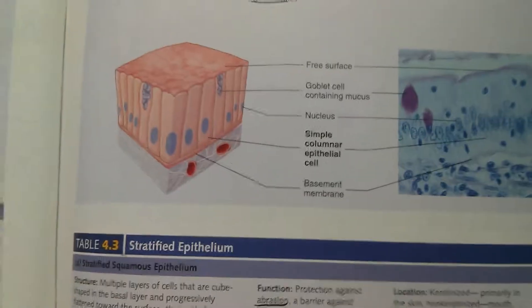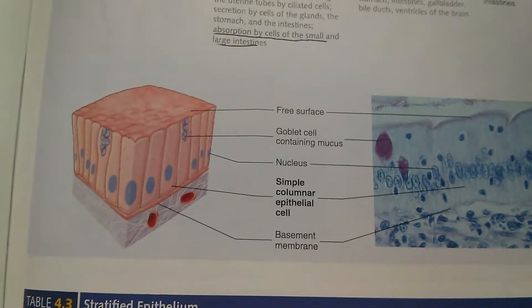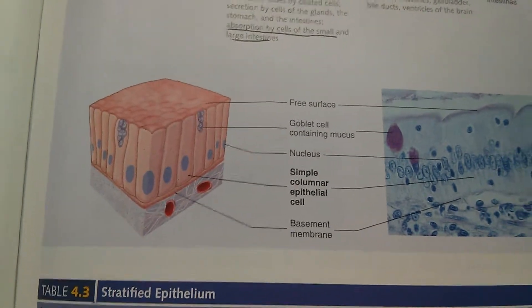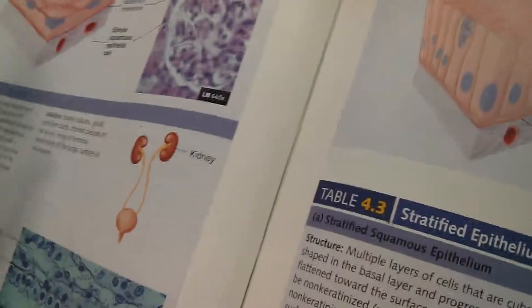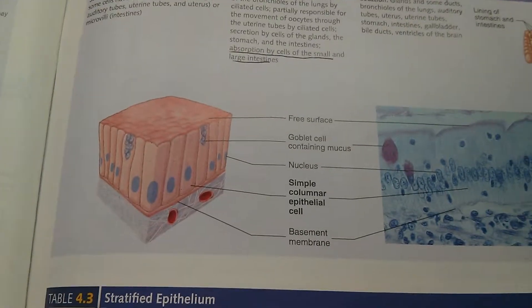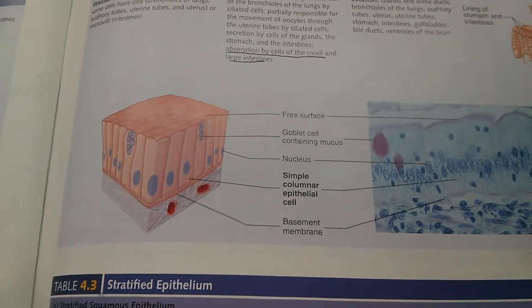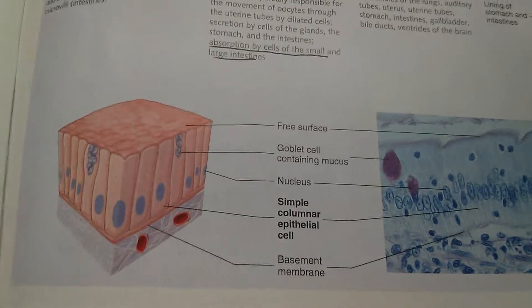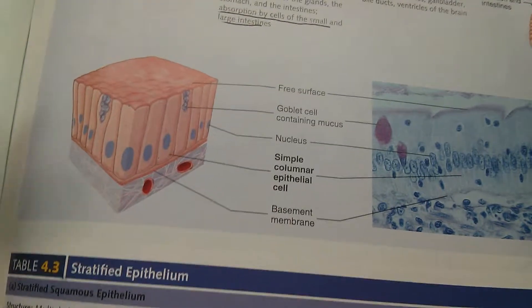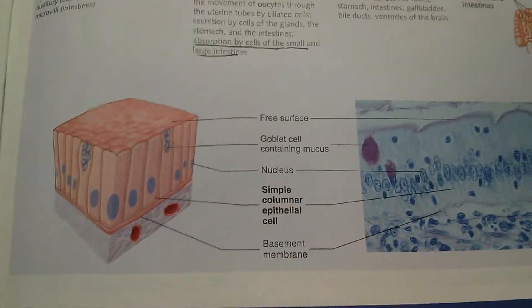Now let's talk about columnar cells. Columnar and cuboidal are typically going to be involved with secreting and absorbing things. You wouldn't typically see a squamous cell involved with secreting or absorbing, because they don't have much volume or surface area — they're really small and don't have space to absorb or secrete. But columnar cells have more space in them and are larger, so they have the capacity to do secreting and absorbing.